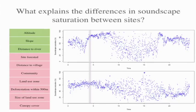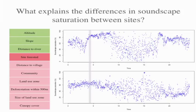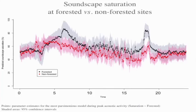We looked at three different environmental variables — altitude, slope, and how far from rivers the site was — and then a couple of variables describing the intensity of human use of that forest. We used an information-theoretic approach to pick the best combination of variables to explain the variation in soundscape saturation between sites, done separately for each minute. It turned out that the single most important variable was whether that site is forested or not — whether it has continuous canopy cover.